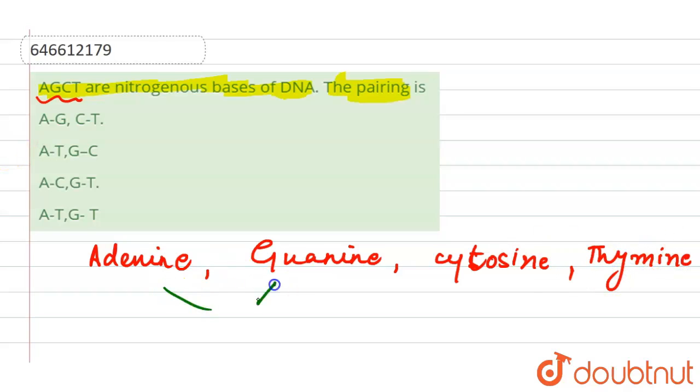Adenine, guanine, cytosine, and the fourth one is our thymine. If we talk about these two, so these two are our purines. These two are our purines. And if we talk about these two, these two are our pyrimidines.